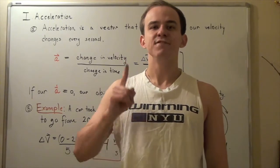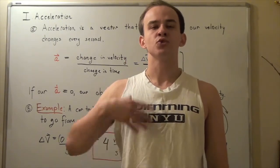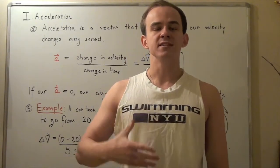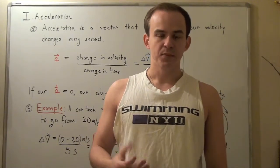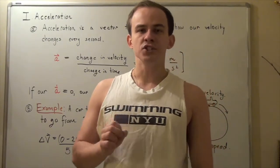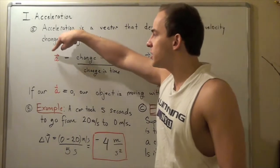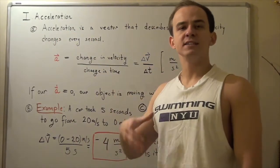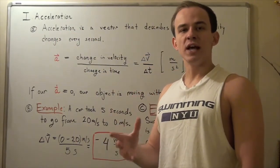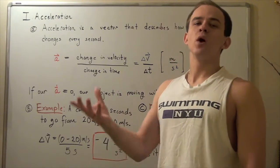Acceleration is a vector and it helps us describe how our velocity changes every second. The symbol for acceleration is a lowercase a with an arrow on top, signifying the fact that it's a vector. So it has both magnitude as well as direction.